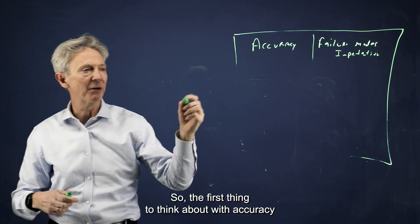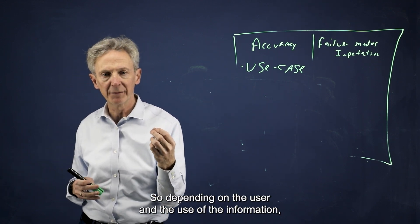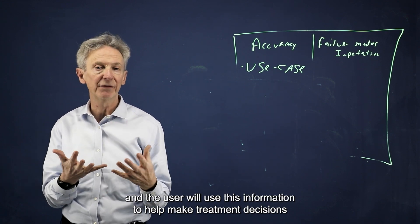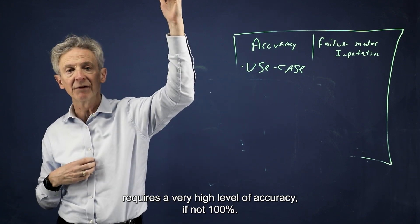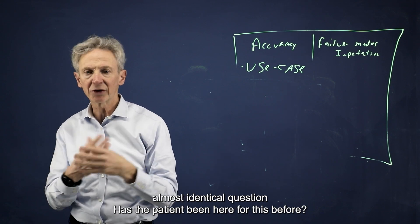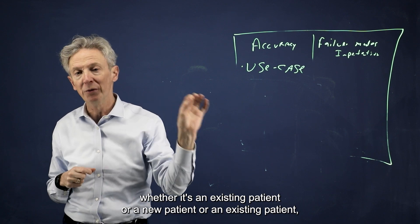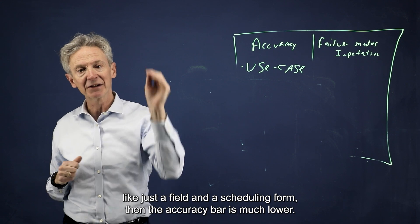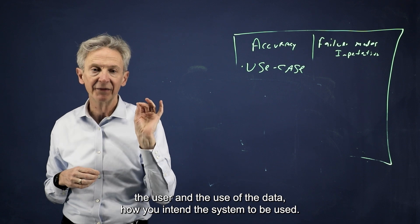The first thing to think about with accuracy is that use case really matters. Depending on the user and the use of the information, you will have different accuracy thresholds. For example, if the user is a clinician and they will use this information to help make treatment decisions or diagnosis decisions for the patient, then this use case requires a very high level of accuracy, if not 100%. But if it's a scheduling user asking the same question to fill out a field, whether it's an existing patient or new patient, then the accuracy bar is much lower.